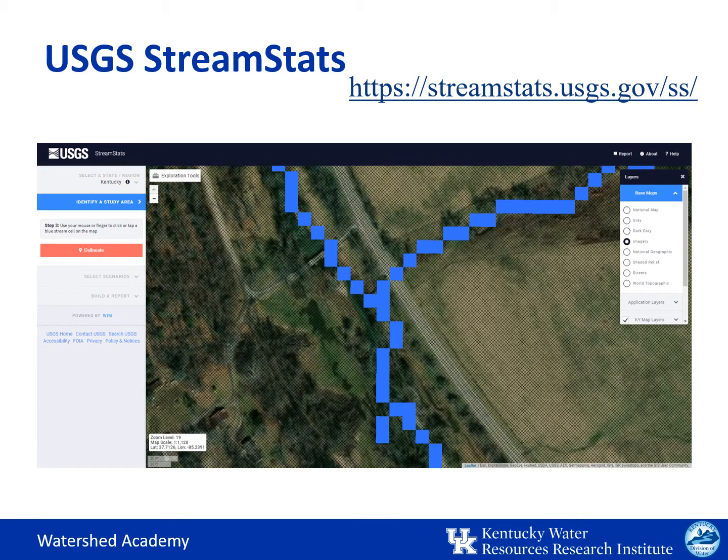Now you can see the aerial image with the blocky blue streams. To identify your study area, you'll click on Delineate and then click right at the mouth of the stream to help you capture the entire drainage area for that chosen stream.